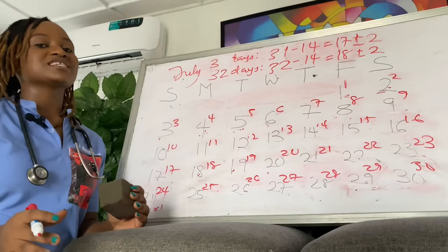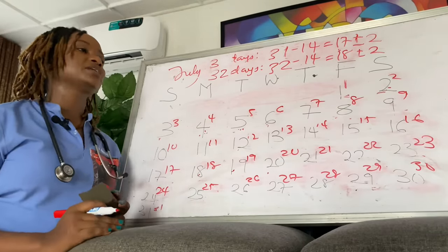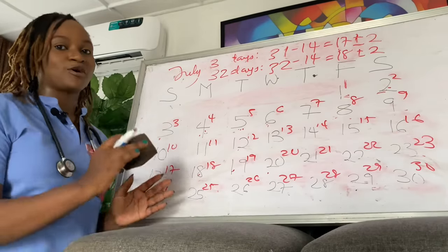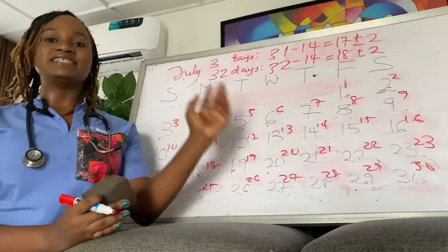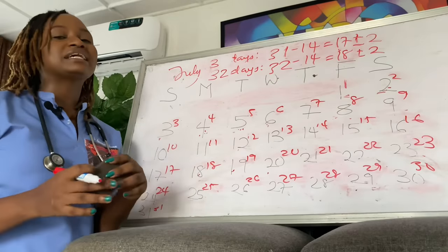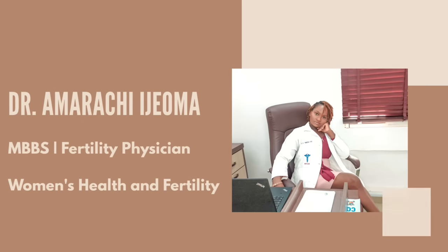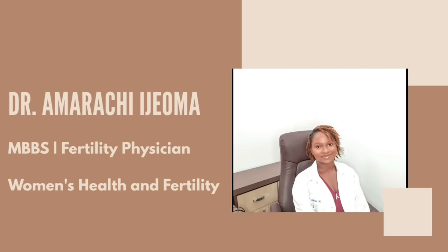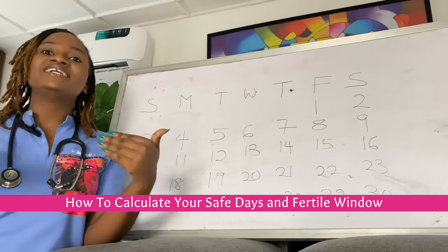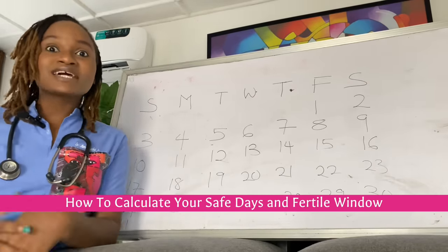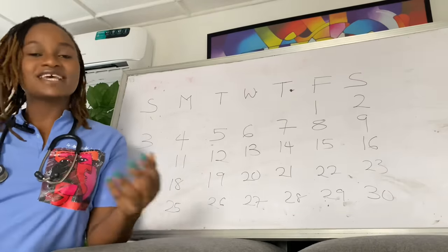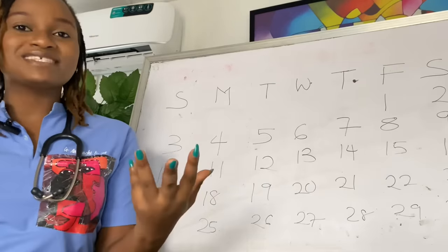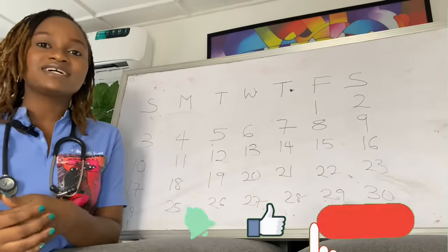I'm taking my time to do this one by one because I've done a similar video before and people still ask me about their cycle and ovulation. So in this video there will be no reason why I didn't cover your cycle length — you can pause and rewind. Hi, in today's video I'm going to tell you how to calculate your safe days to avoid pregnancy and your fertile window to know when to have sex to get pregnant. I'm Dr. Amarachi Idioma, a fertility physician, and this channel focuses on infertility and women's health.